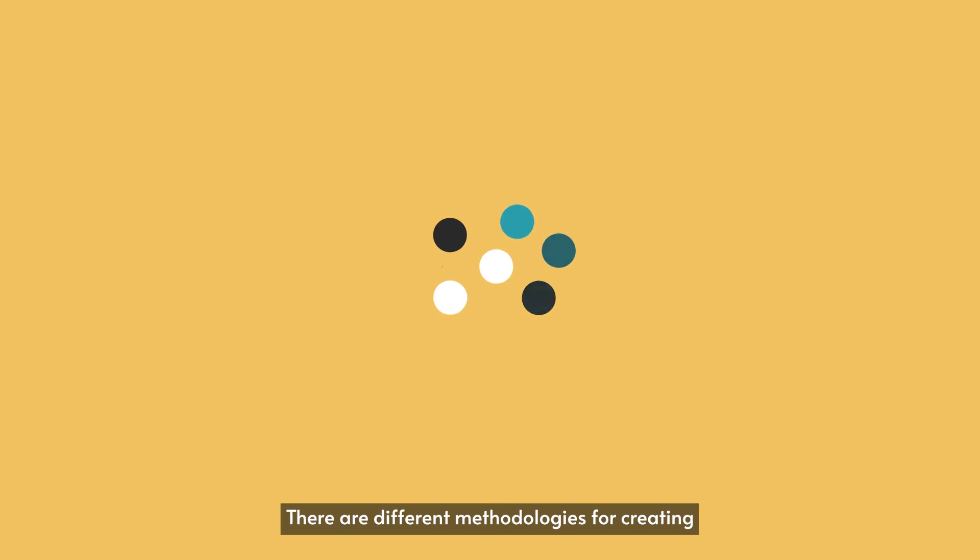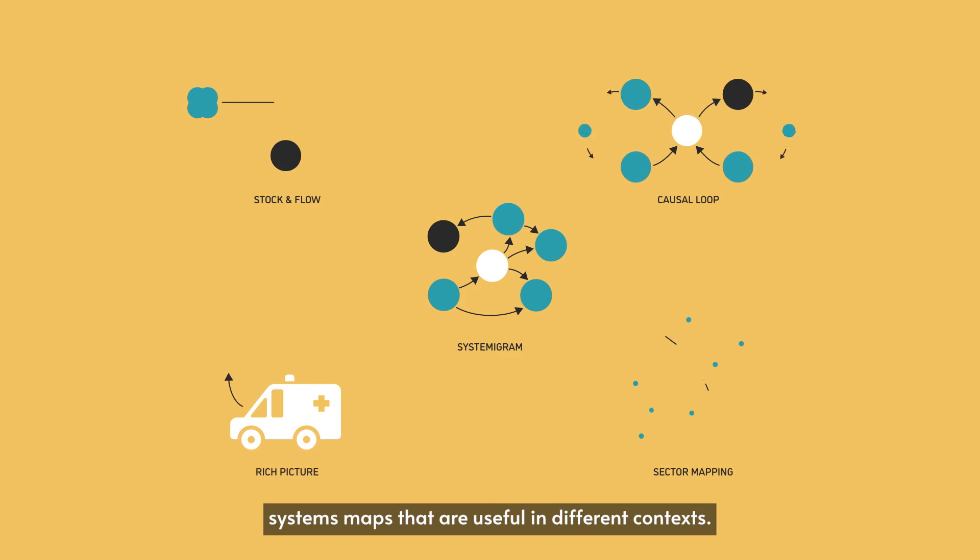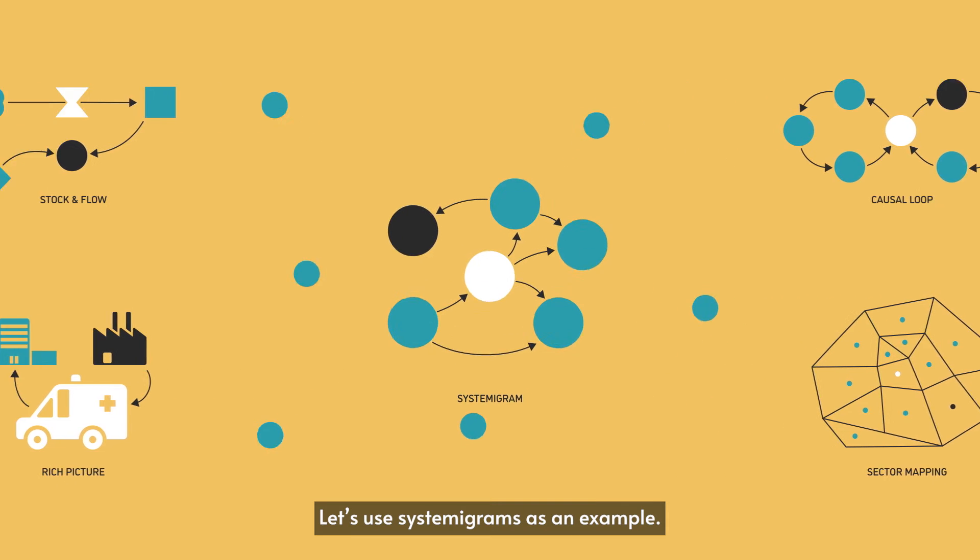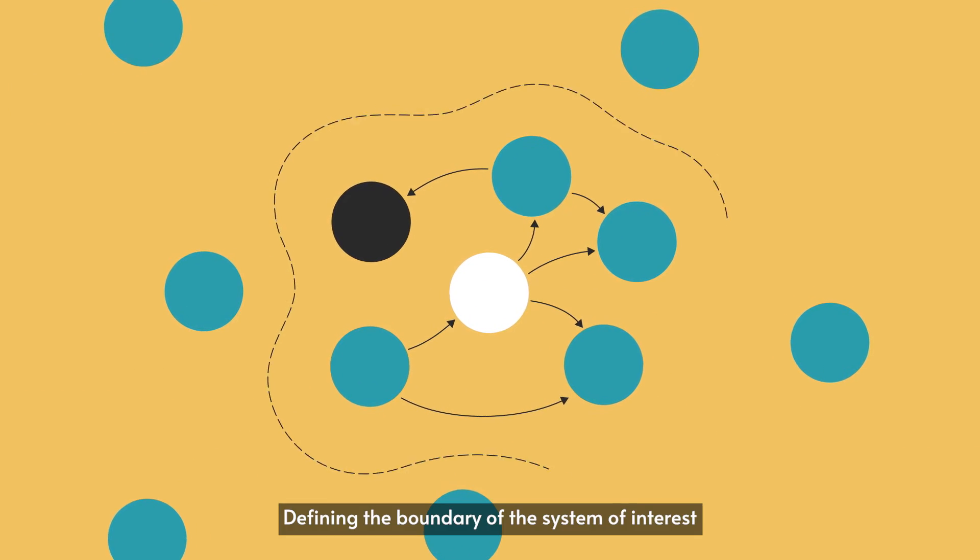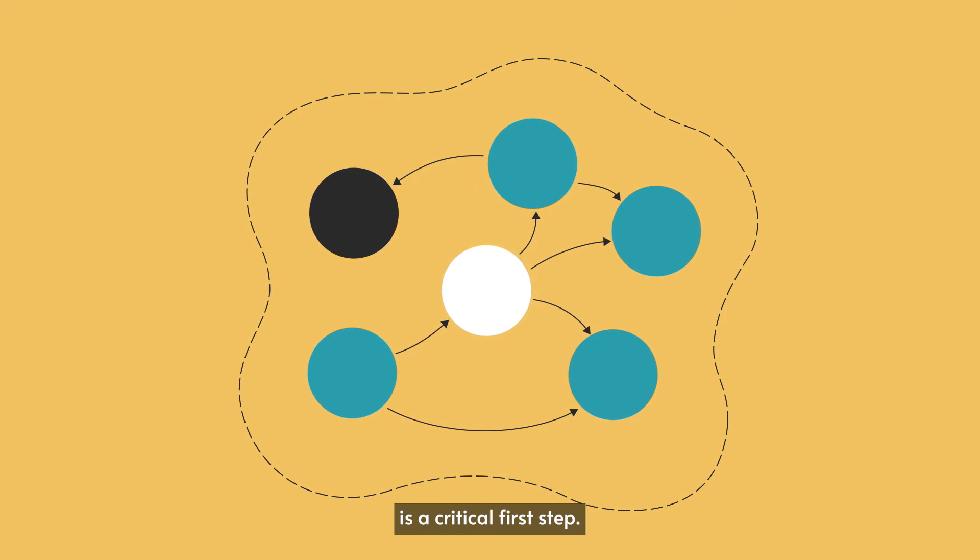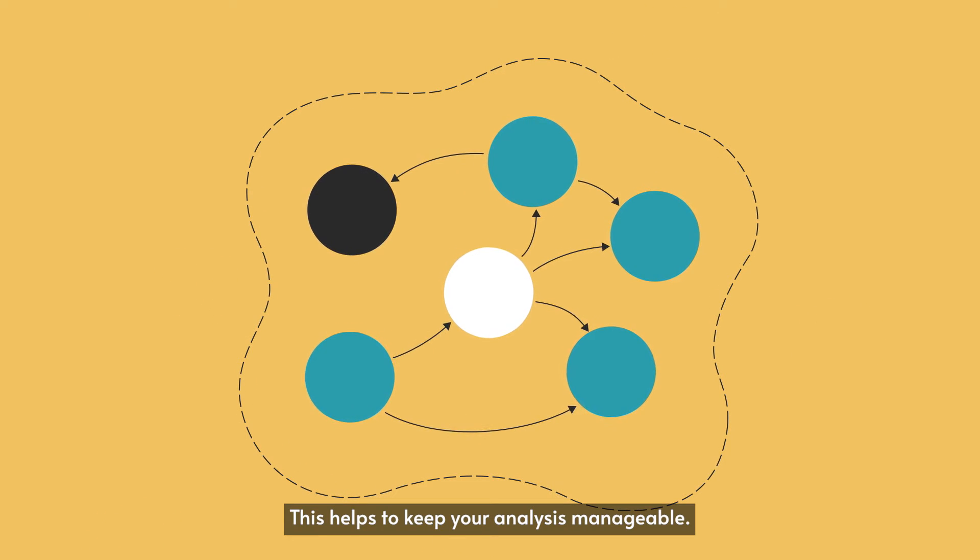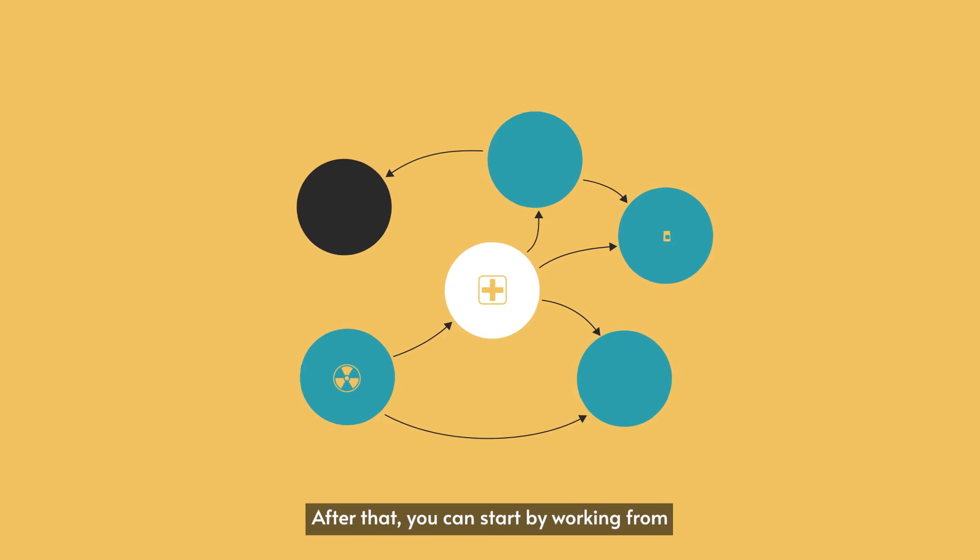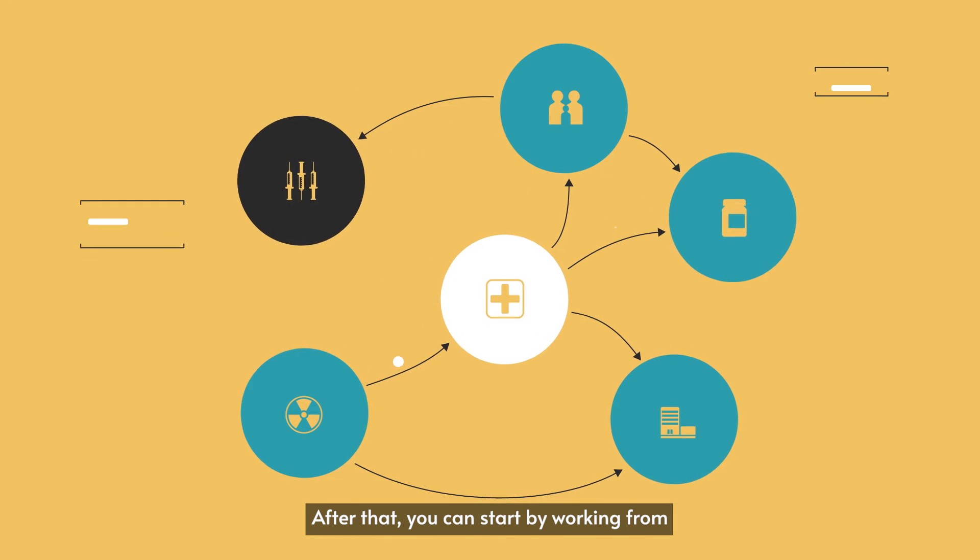There are different methodologies for creating systems maps that are useful in different contexts. Let's use systemigrams as an example. Defining the boundary of the system of interest is a critical first step. This helps to keep your analysis manageable. After that, you can start by working from secondary sources.